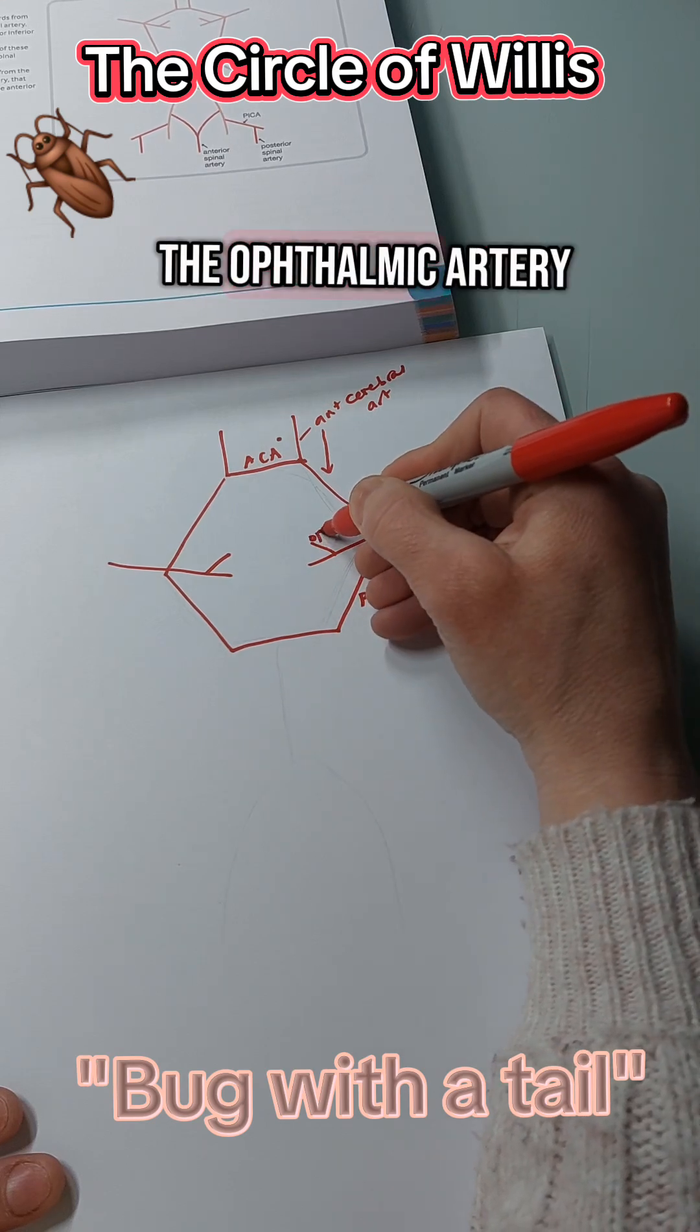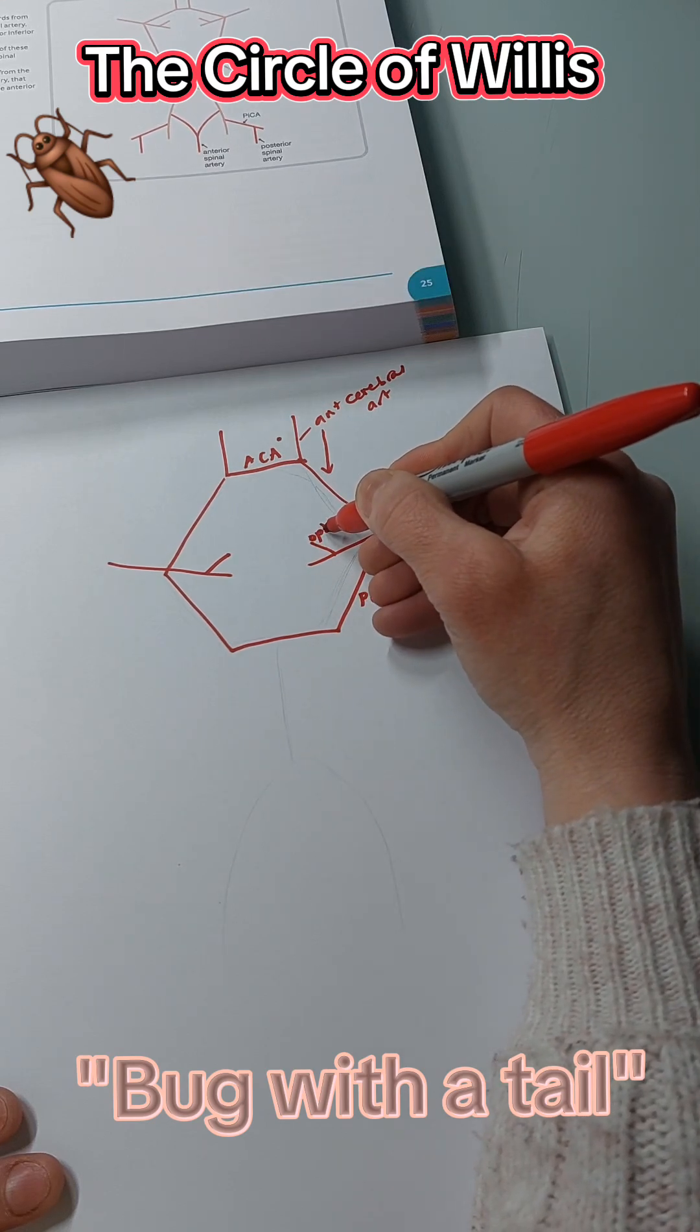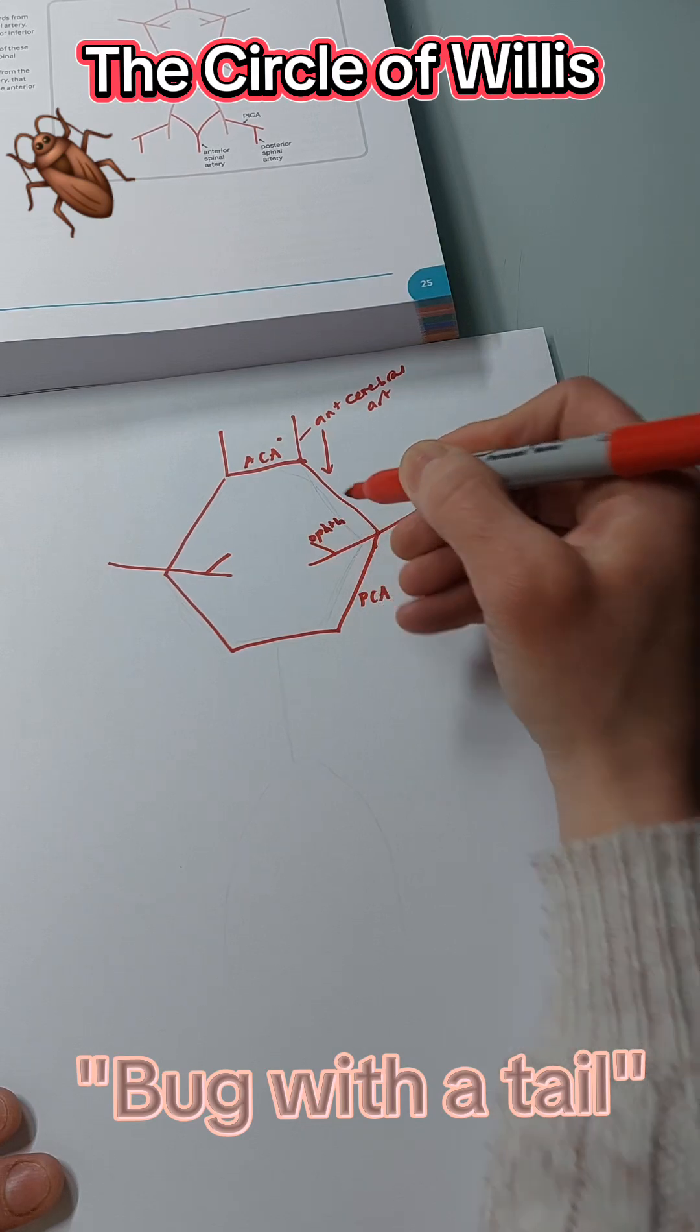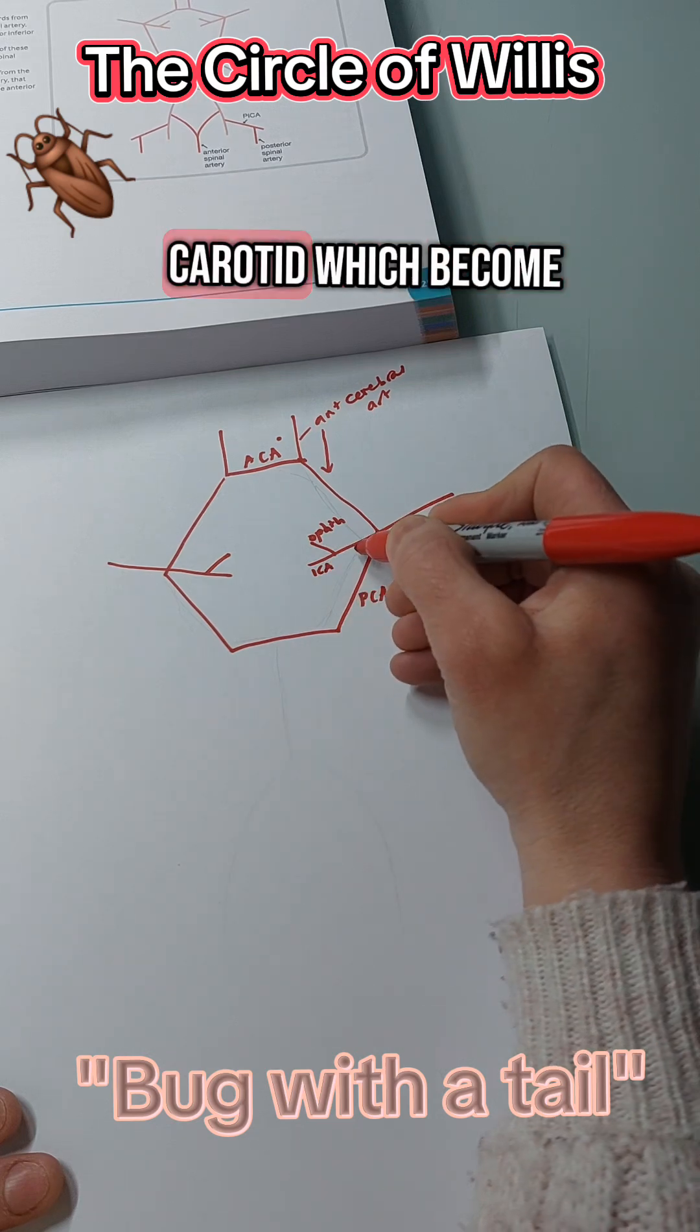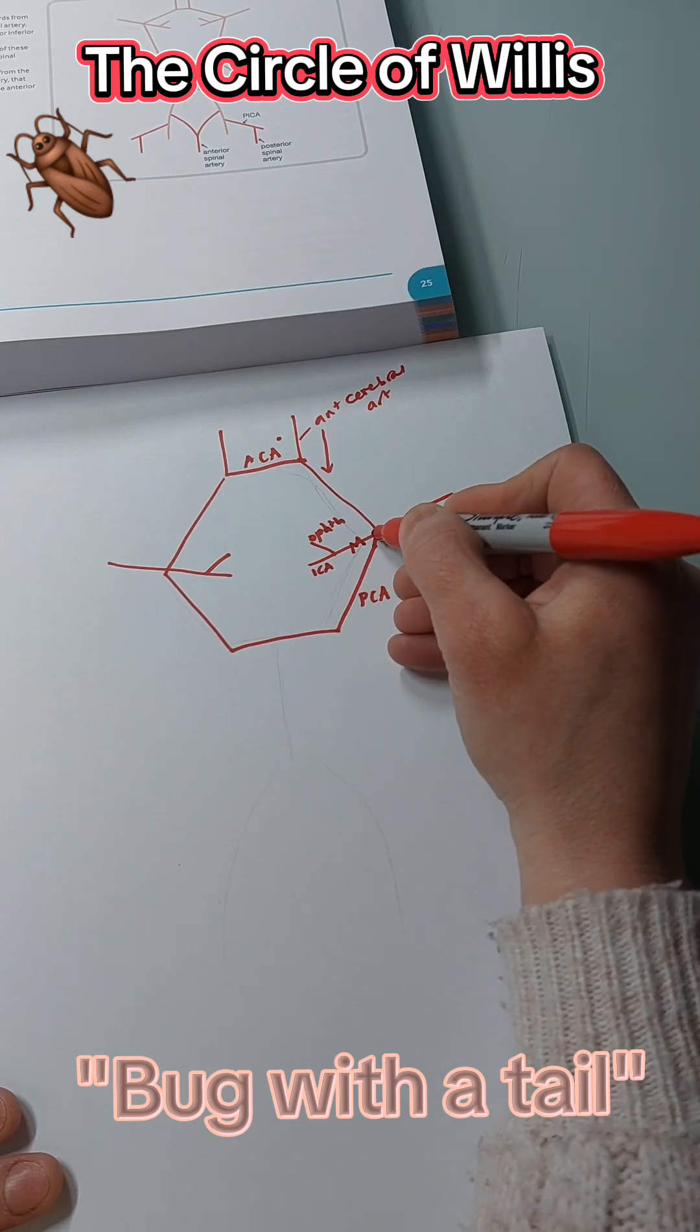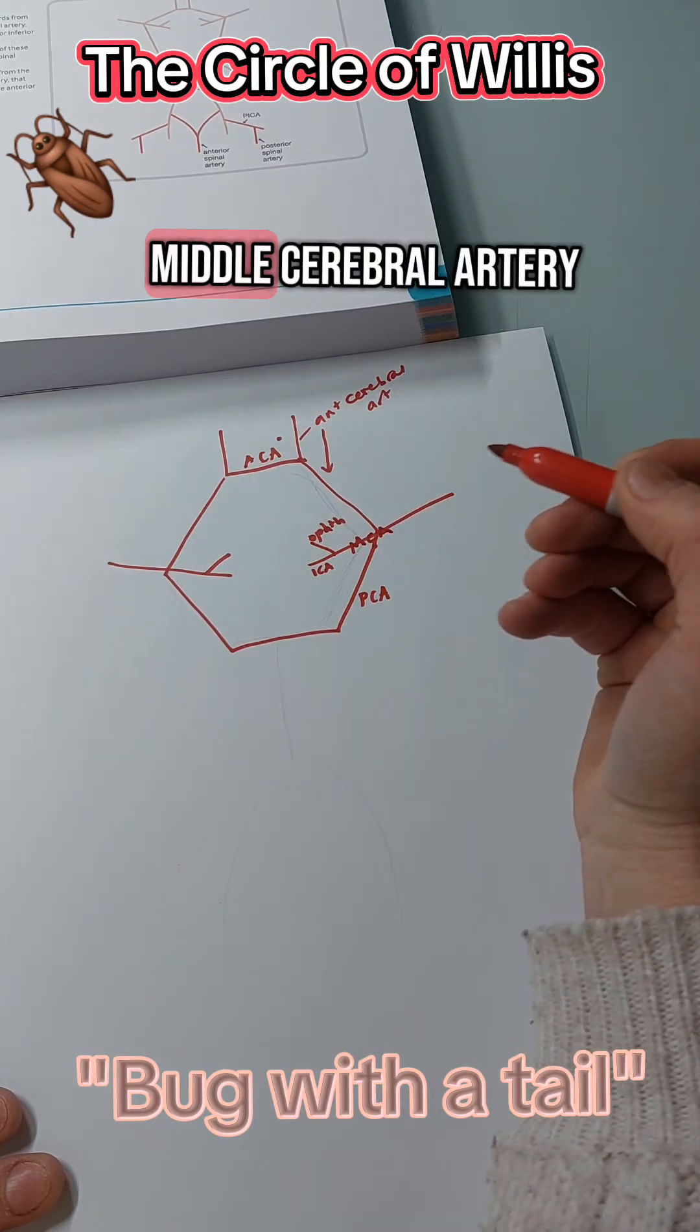So this is the ophthalmic artery and the internal carotid, which come from the middle cerebral artery.